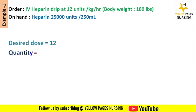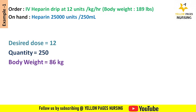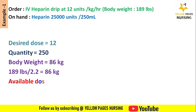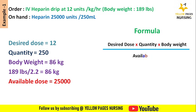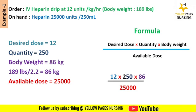Quantity will be 250, which is the total volume used for dilution. Body weight is 86 kilogram — we converted lbs to kg by dividing 189 lbs by 2.2, which gives 86 kilogram. Available dose is 25,000, that is the strength of heparin diluted in 250 ml. Applying all into the formula — desired dose multiplied by quantity multiplied by body weight, divided by available dose.